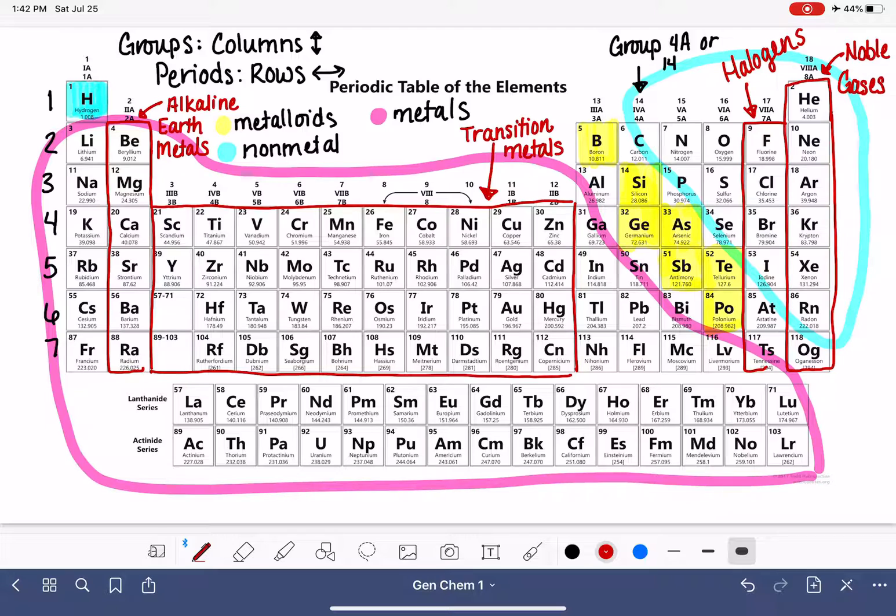And then last but not least, group 1A, except for hydrogen, so not including hydrogen, group 1A are the alkali metals.